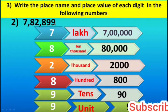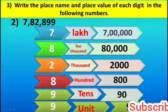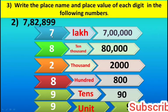Continuing: 7 is placed on lakh and place value is 7 lakh. 8 is placed on 10,000 and place value is 80,000. 2 is placed on 1,000 and place value is 2,000. 8 is placed on 100 and place value is 800. 9 is placed on 10 and place value is 90. Last digit 9 is placed on unit and place value is 9.